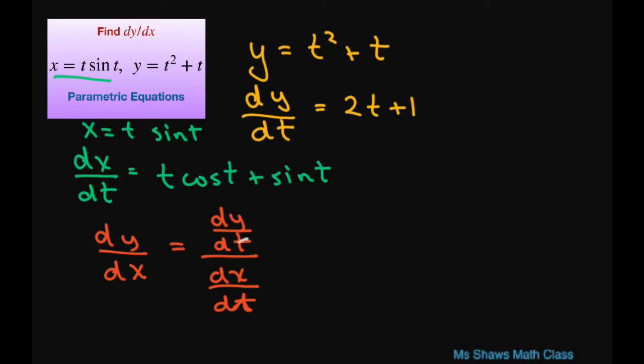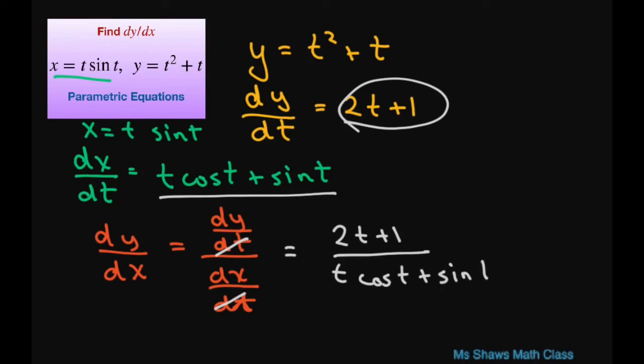Because these two will just cancel out. So basically you're going to use substitution. And this is going to be 2t plus 1 divided by t times cosine of t plus sine of t.